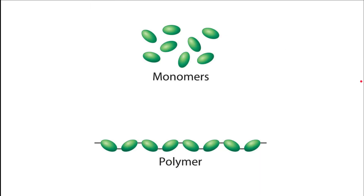Now let's get into monomers and polymers. Hydrogen, carbon, nitrogen, and oxygen are the four elements that make up the vast bulk of the biomass of an organism, and they are found within four main biological molecules: lipids, carbohydrates, nucleic acids, and proteins. Carbohydrates, nucleic acids, and proteins are all made up of repeating units known as monomers that bond together to form polymers. In carbohydrates the monomers are monosaccharides; in nucleic acids they are nucleotides; and in proteins they are amino acids.